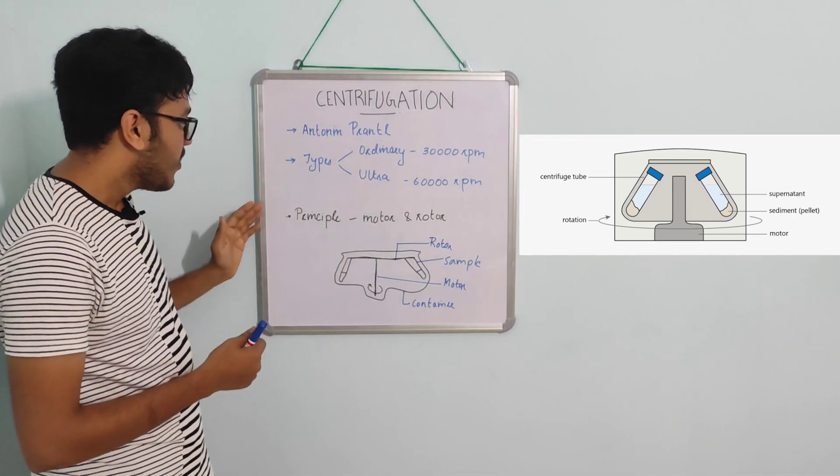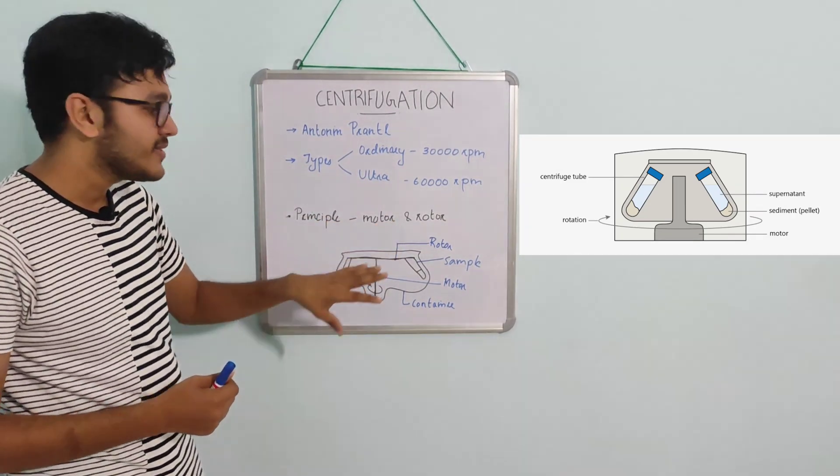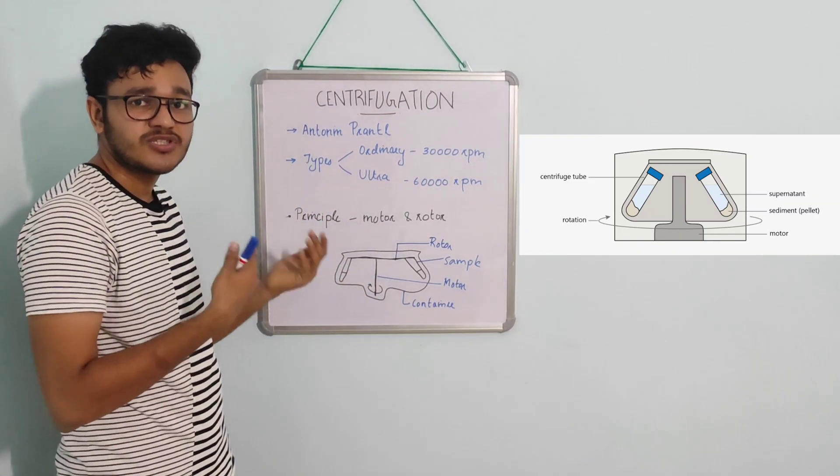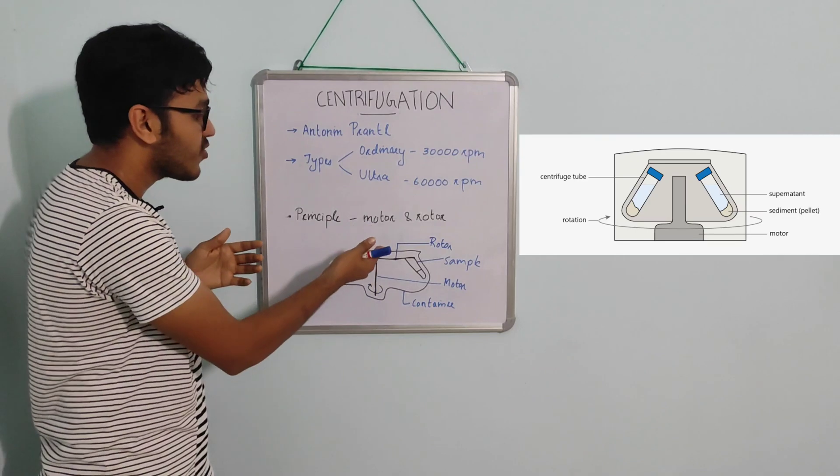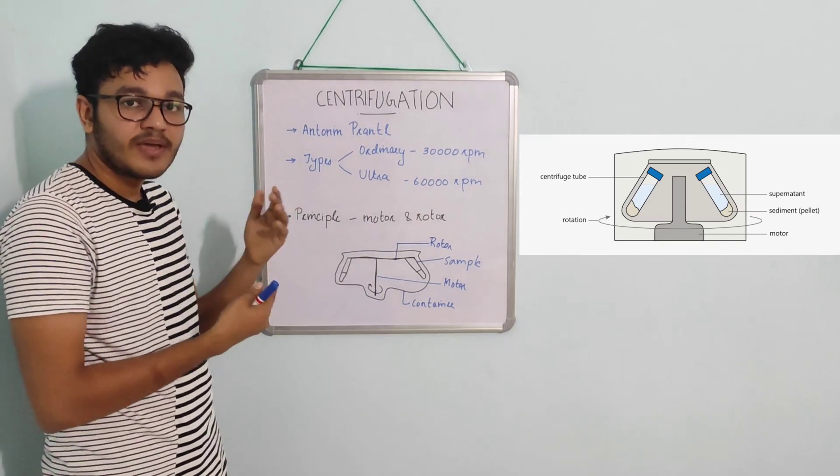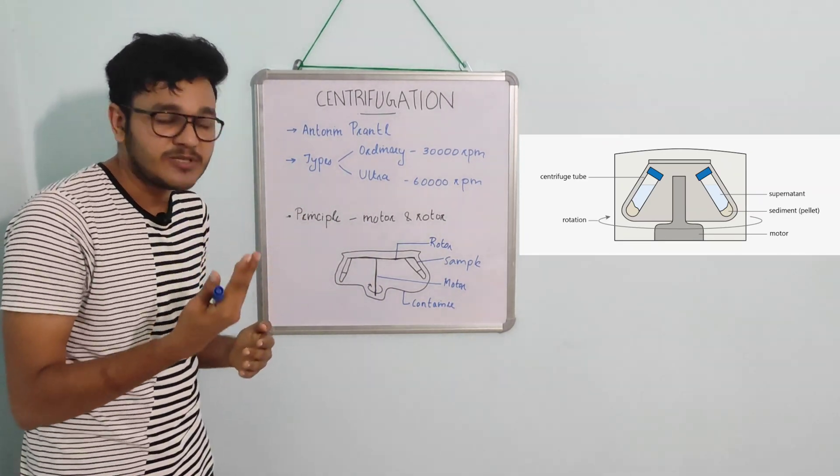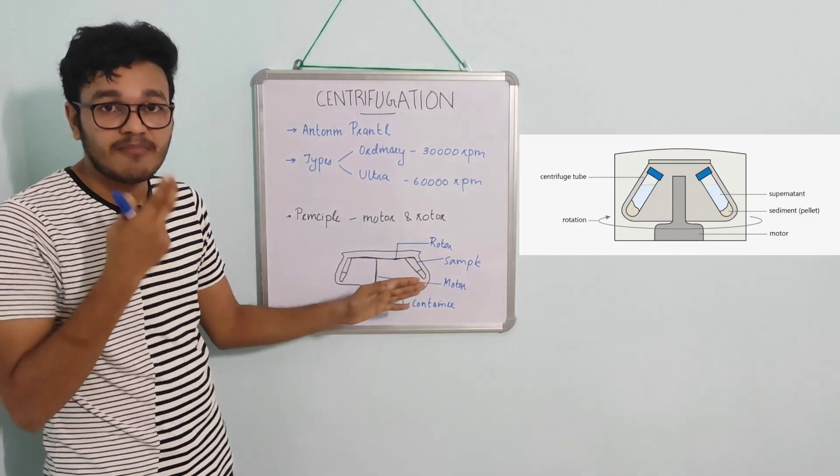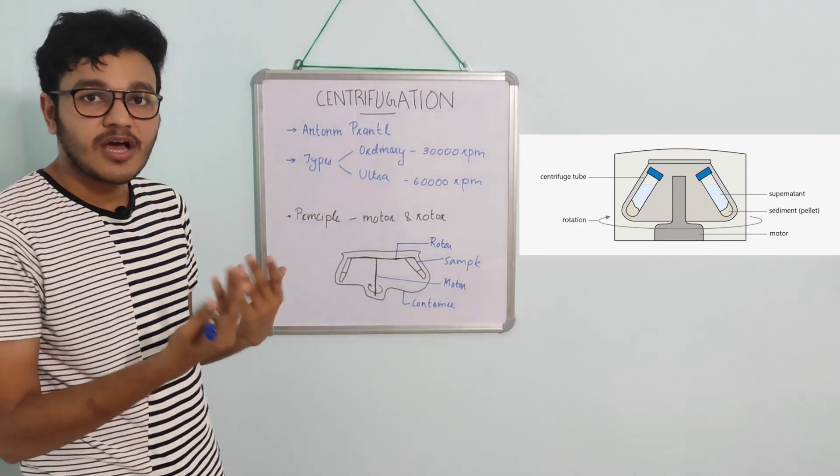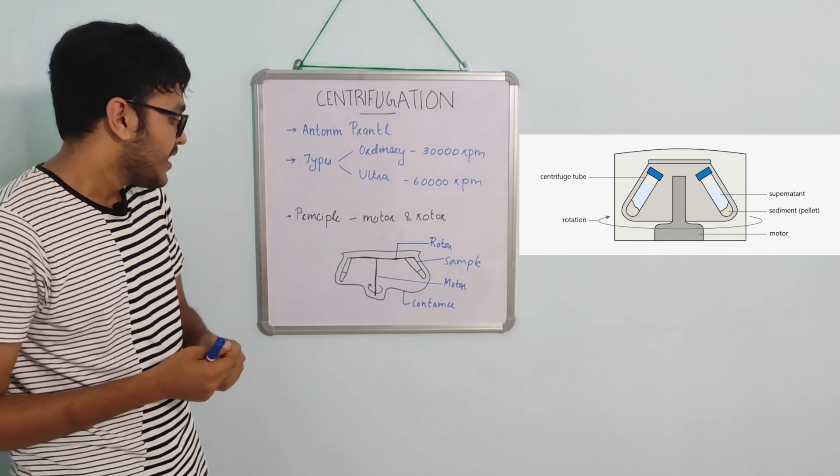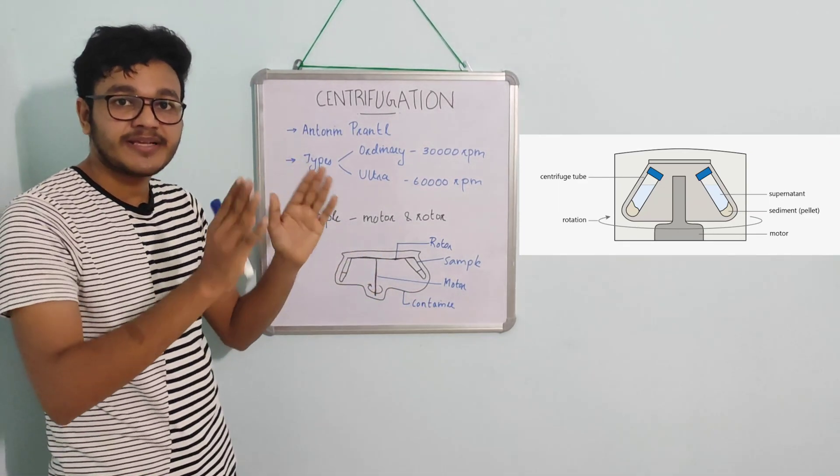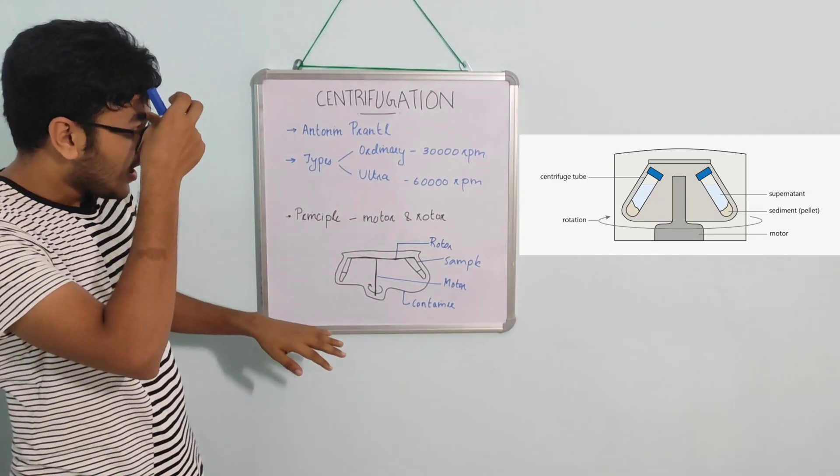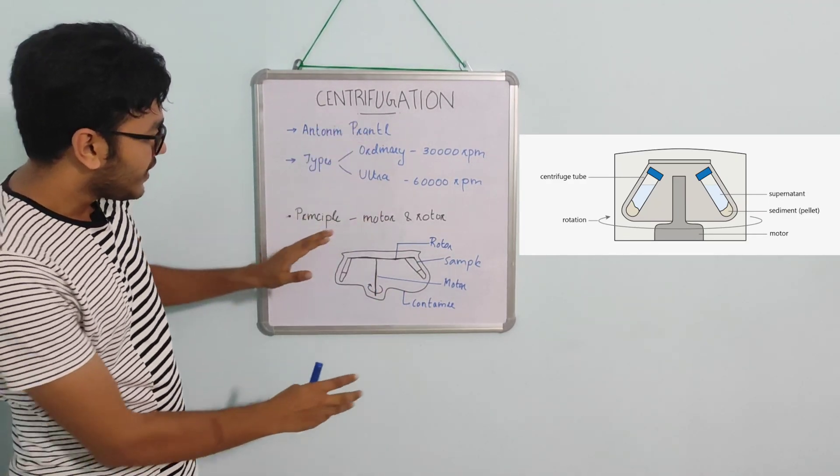Coming to the principle, structure, and components: in a simple way, a centrifuge has a motor which helps in rotation. It is connected to a rotor, and the motor and rotor rotate at the same speed. The rotor has a sample holder which contains the sample, and the sample is rotated with the help of the rotor. It has a container which protects the entire system. This is the actual structure.